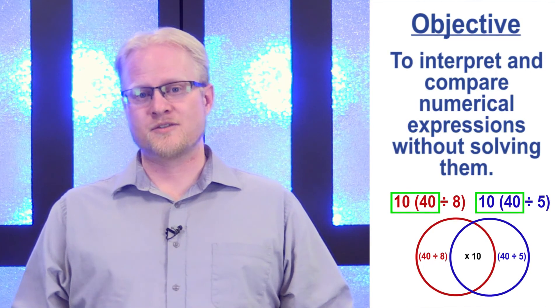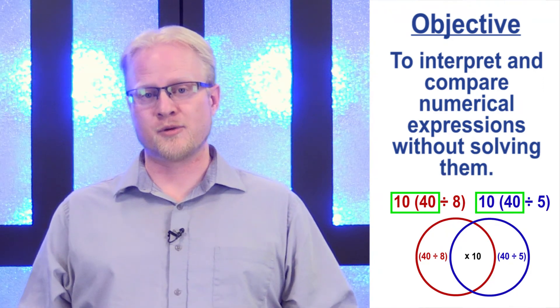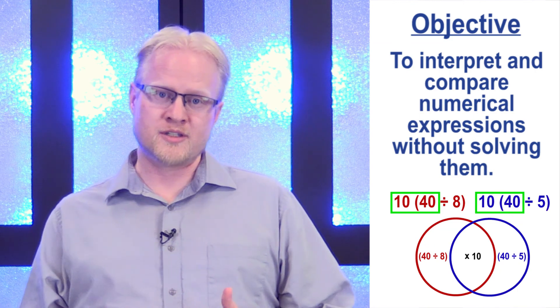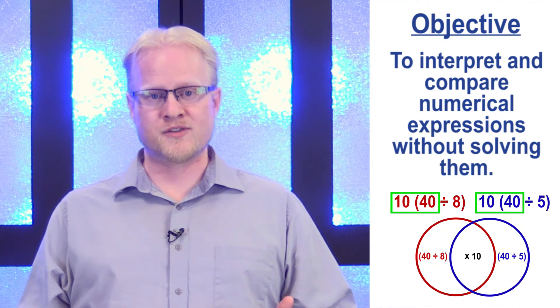The objective for this lesson was to interpret and compare numerical expressions using verbal language. We met this objective by examining our expressions in words and then identifying similarities and differences in pairs of expressions using a Venn diagram.